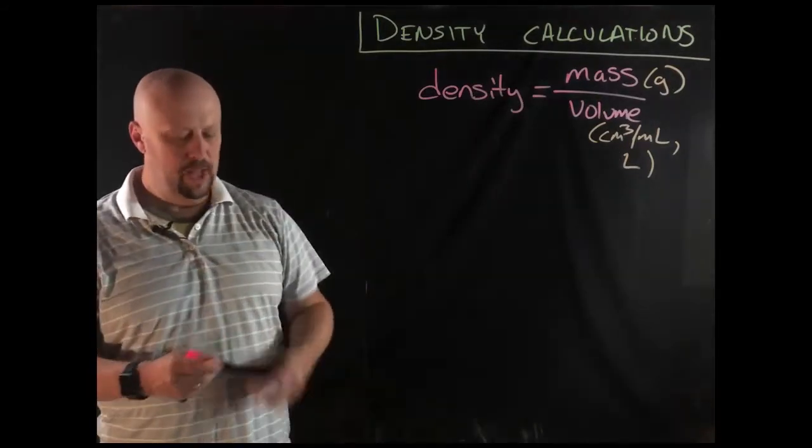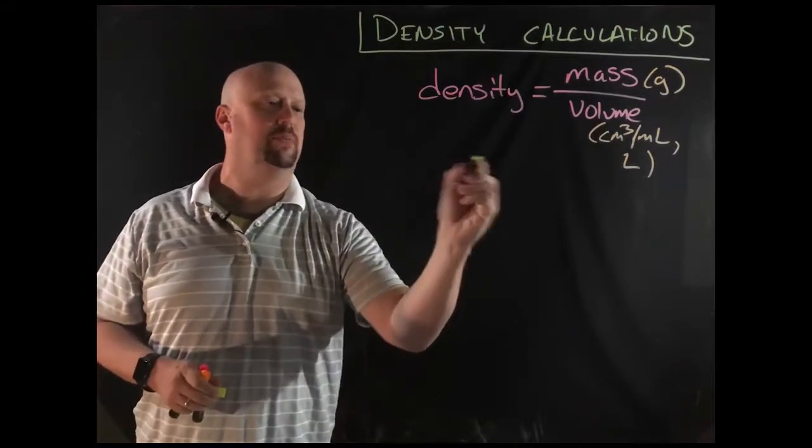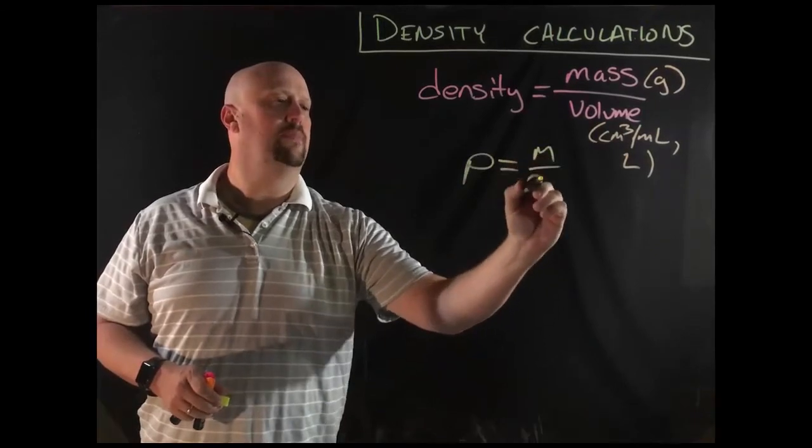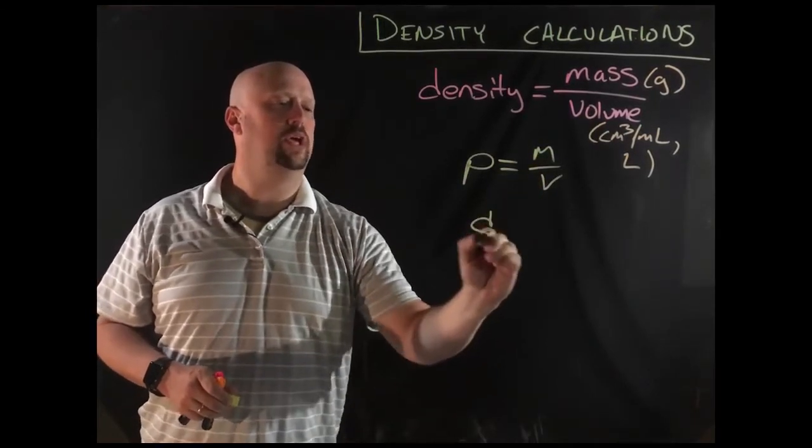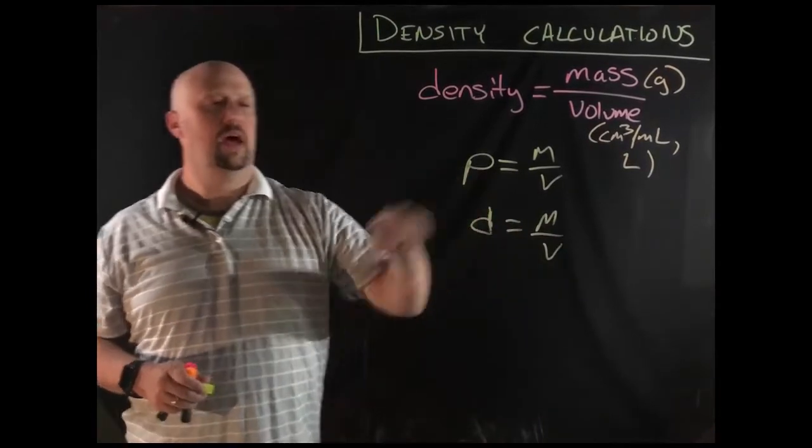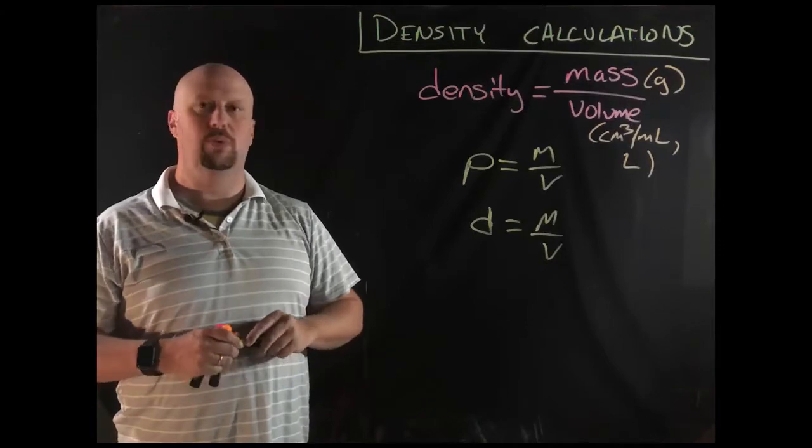Okay, so there's the formula. Remember that what the formula also looks like, if we reduce it down to its variables, are that it is ρ equals mass over volume, or we could also say d equals m over v. Rho, remember, is a little bit more correct, and that's what I'm going to use as we walk through these questions.